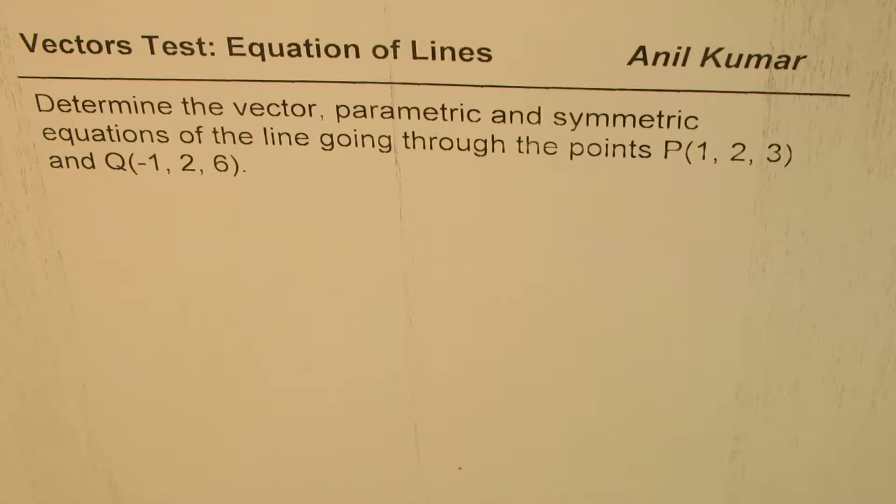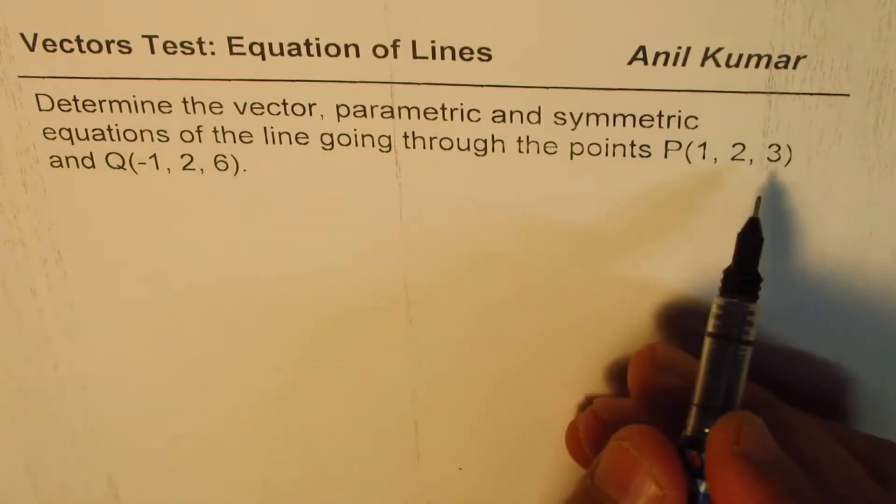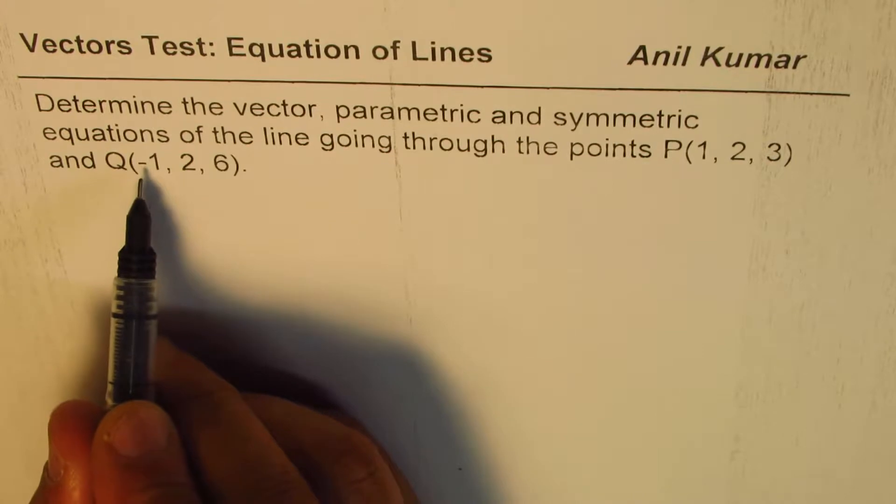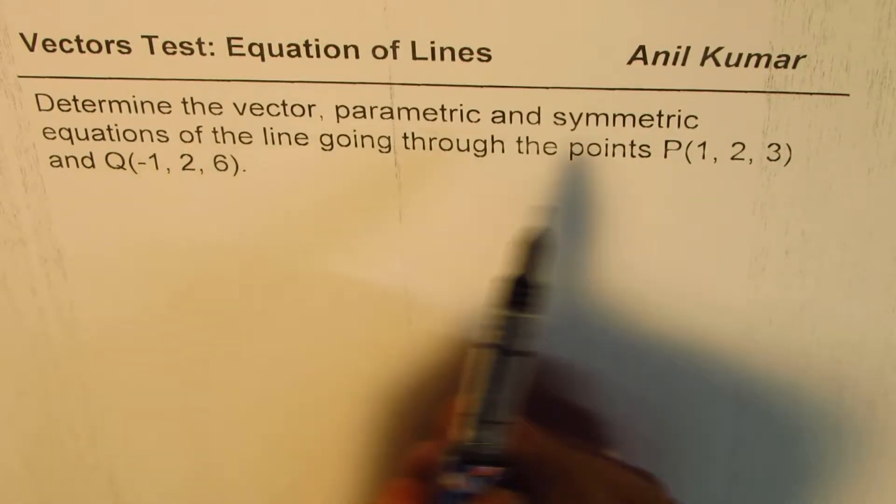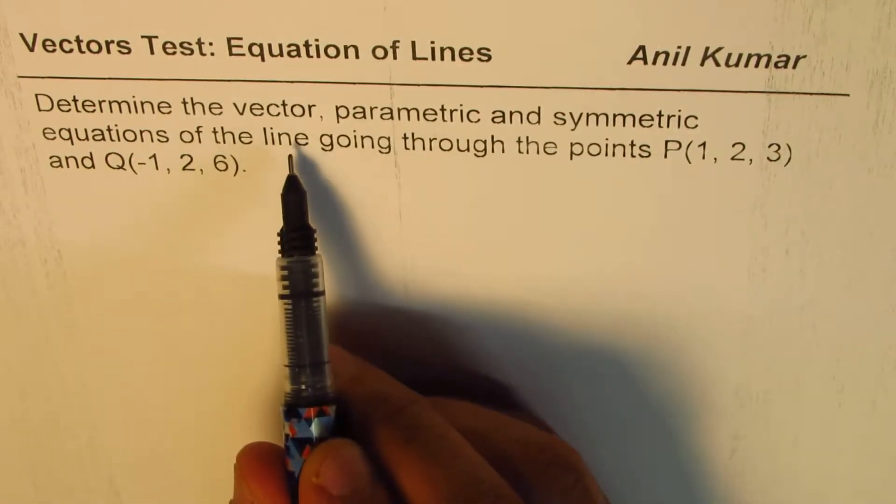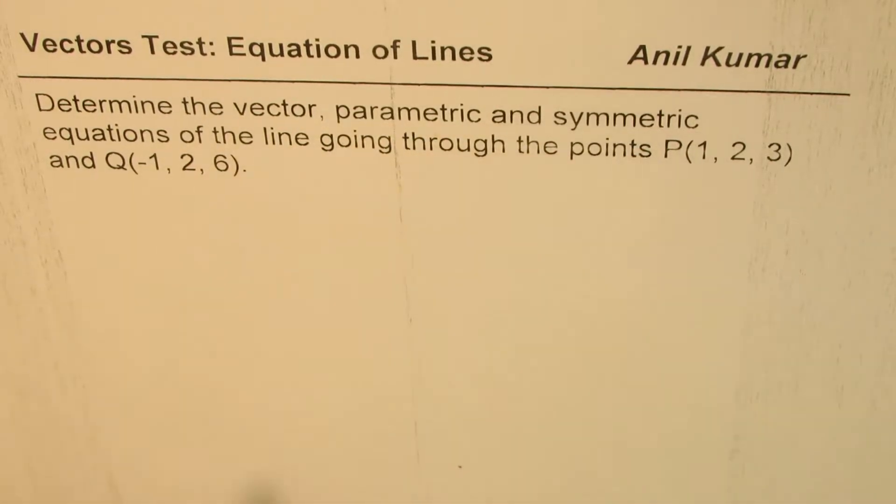The question here is, determine the vector, parametric and symmetric equations of the line going through the points P(1,2,3) and Q(-1,2,6). So we are given two points, we need to find equations of the line in different forms. You can always pause the video, answer the question and then look into my video.